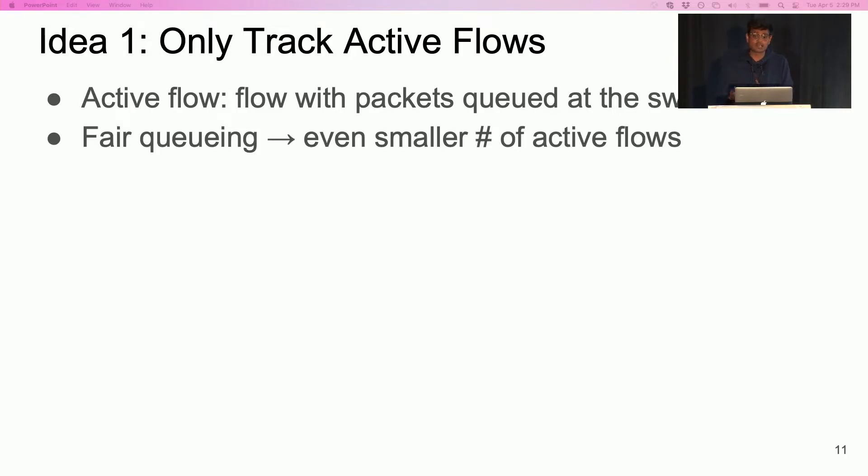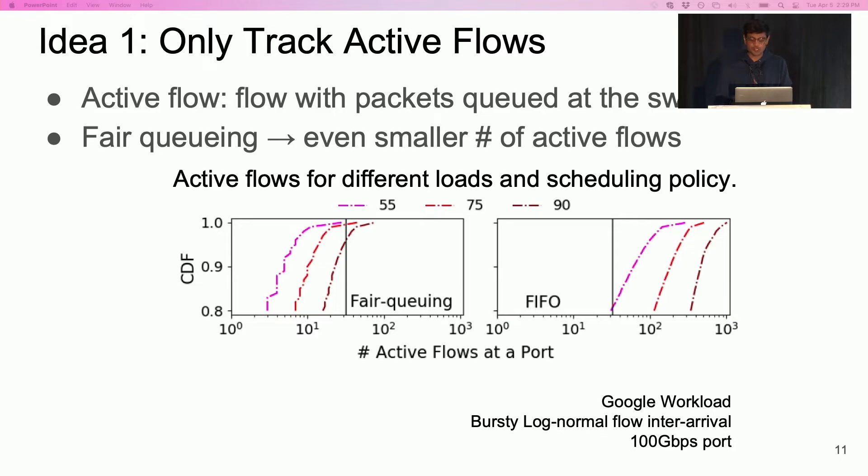Further, the number of active flows at a port is smaller than you might think because of fair queuing scheduling. This figure shows cumulative distribution of active flows at a single port across different loads with fair queuing and FIFO scheduling policy. The vertical line shows the number of queues at a port in Tofino 2, a state-of-the-art P4-based programmable switch. With fair queuing, the number of active flows is less than the number of queues majority of the time.